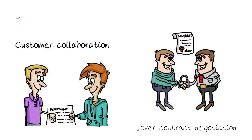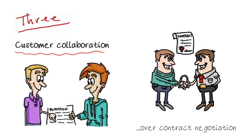Value number three is that customer collaboration trumps contract negotiation. We're not completely dismissing having a contract altogether, but it shouldn't lock down all of the details when the project hasn't even started. So we should collaborate to find the best solutions as we go along, as things evolve. We don't want to be locked into that set of signed-off requirements at the very beginning of the project.